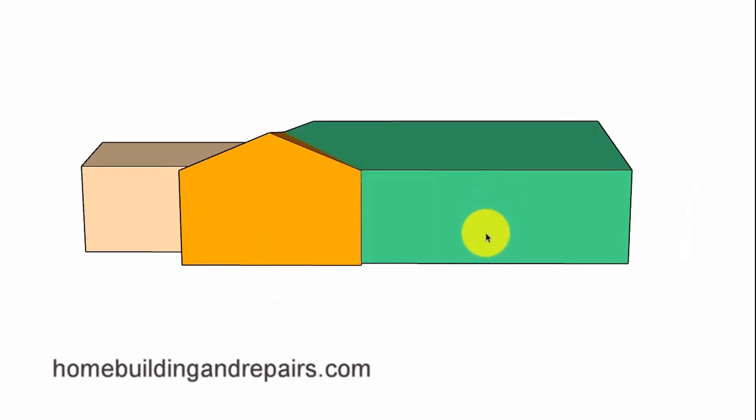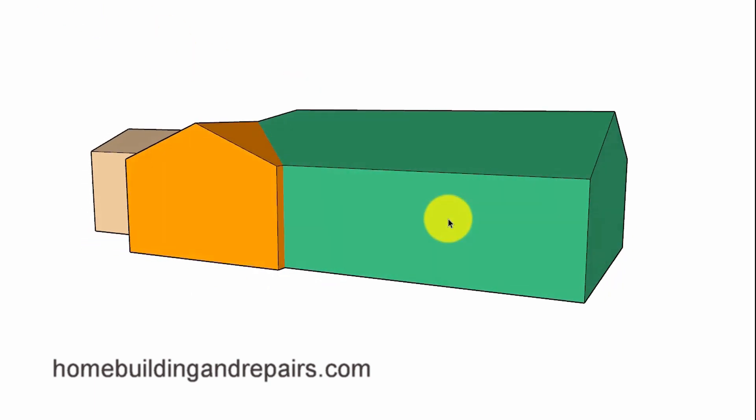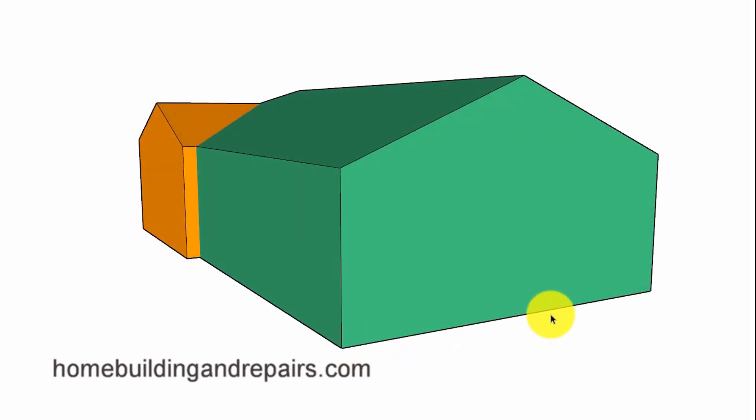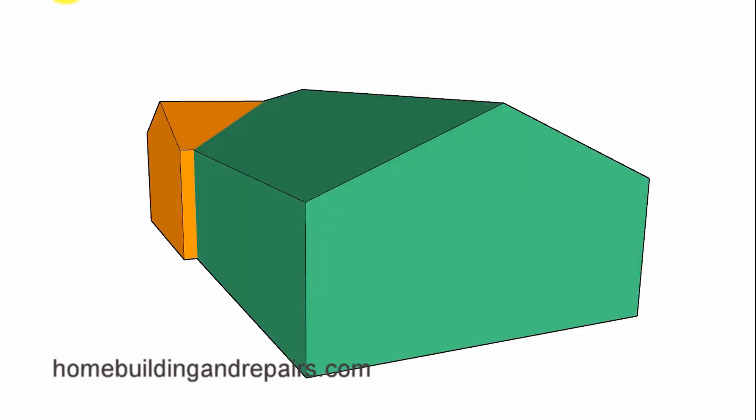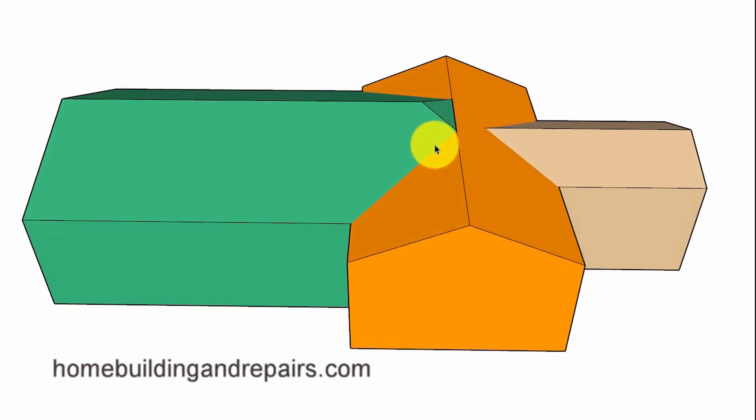And then we're going to have the opposite effect if I take the wider span and intersect it into a shorter span. So again, 15 foot wide on this section, 20 foot wide on this section, and then we're going to have a ridge that will look something like this.